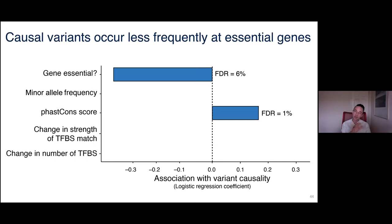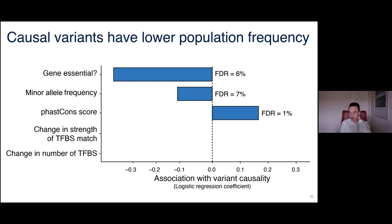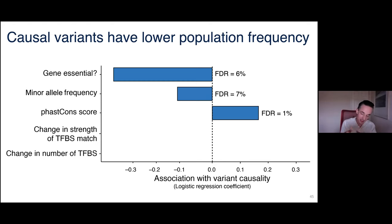Another finding: variants in promoters of essential genes are less likely to influence gene expression. The interpretation is that essential genes are those you cannot delete without killing the yeast, so any variant that changes expression gets purged by negative selection. What remains are promoter variants that don't actually change expression. And indeed, variants with lower minor allele frequency in the population are more likely to be causal — consistent with purifying selection.